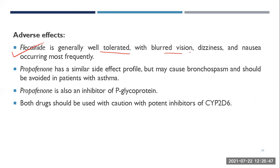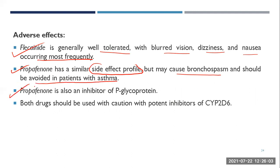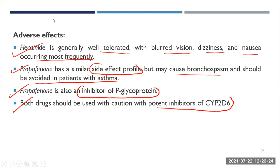Propafenone is metabolized to an active metabolite primarily via CYP2D6 and also by CYP1A2 and CYP3A4; metabolites are excreted in urine and faeces. Adverse effects: flecainide is well tolerated, with blurred vision, dizziness, and nausea occurring more frequently. Propafenone has a similar side-effect profile but may cause bronchospasm and should be avoided in patients with asthma. Propafenone is also an inhibitor of P-glycoprotein. Both drugs should be used with caution with potent inhibitors of CYP2D6.